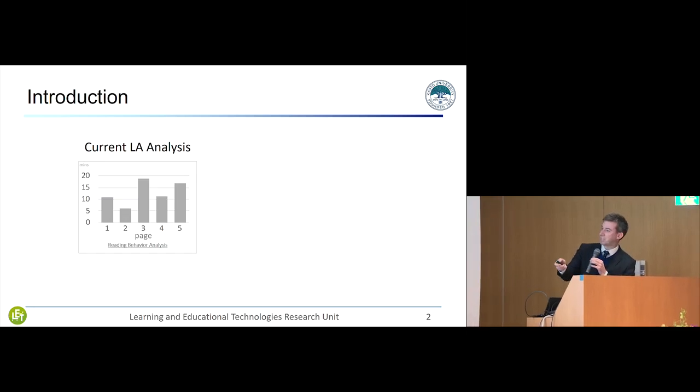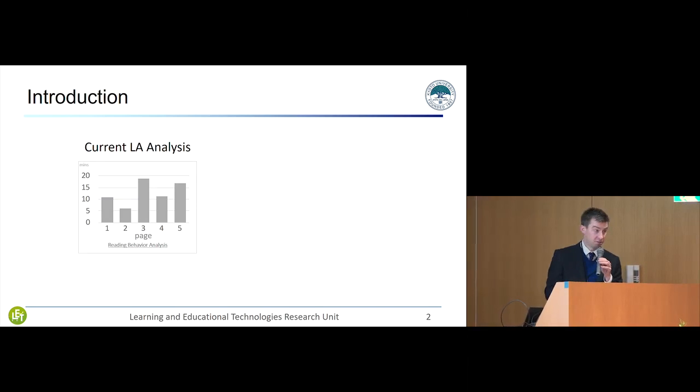Currently we have these sorts of graphs for reading analysis where it shows the pages in the book and how many minutes a student has read that page for. However, a lot of teachers come to me and they say, page number four has been read for 12 minutes, what does that mean?